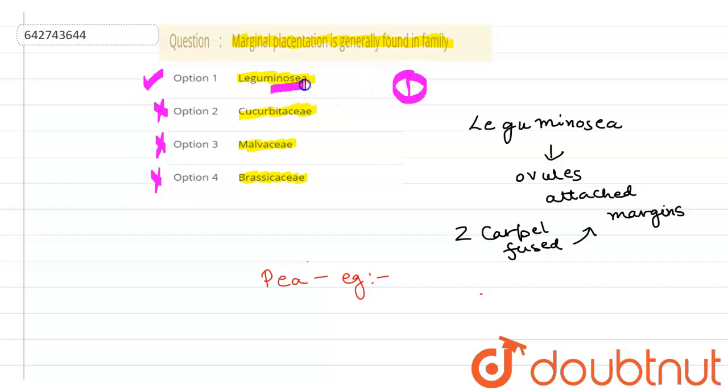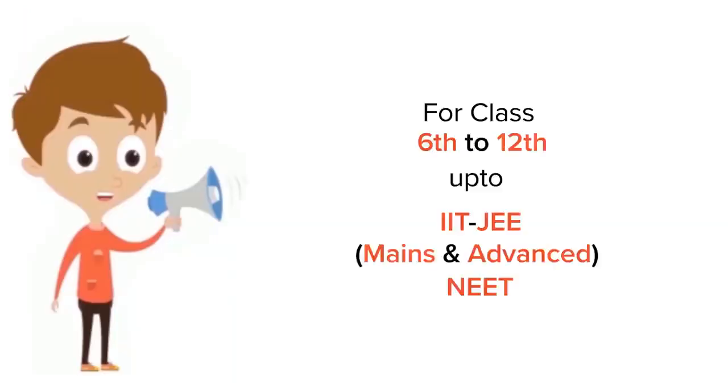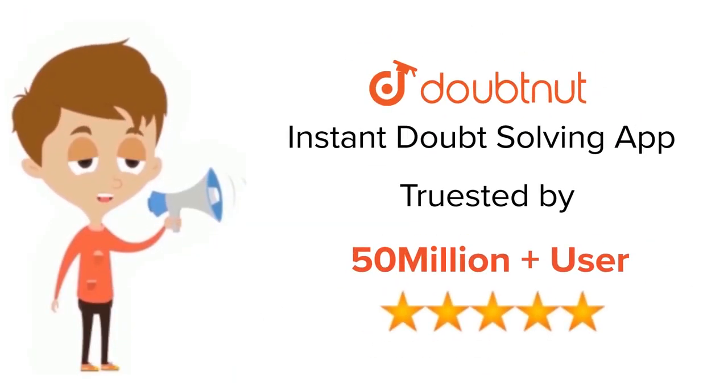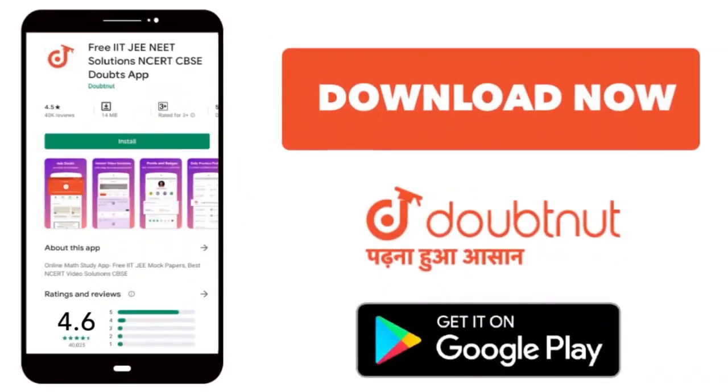Marginal placentation is generally found in the family of Leguminose. Option number one is the correct option, rest all the options are incorrect. Thank you for watching Doubtnut. For class 6 to 12, IIT-JEE and NEET level, trusted by more than 5 crore students, download Doubtnut today.